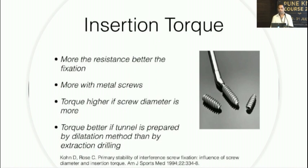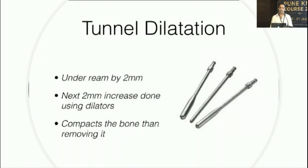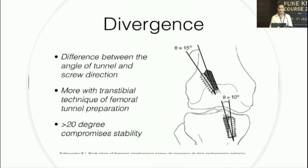Metal screws provide more torque; bio-screws provide less. Tunnel dilatation is a useful method where instead of reaming to full diameter, you dilate the tunnel — compacting the bone rather than removing it, so bone stock is preserved. This is particularly helpful in revision cases where bone is already deficient. Screw divergence of 10–15 degrees can help grip, but too much divergence causes loss of hold.